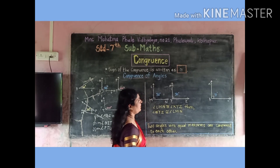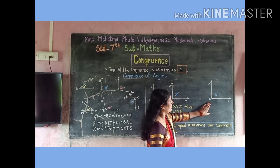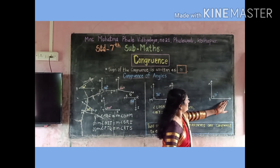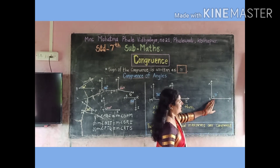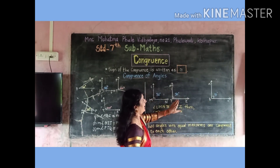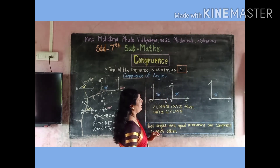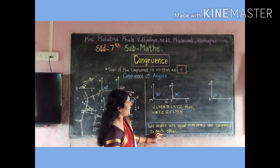Now see this third figure. Angle ABC is equal to 90 degrees. All these three angles are of equal measurement.